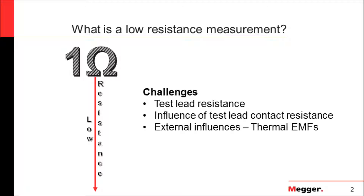Whenever we are measuring resistance values below 1 ohm, we consider those as low resistance, and we should be aware that at those very low levels, we're going to face a few challenges — like the influence of the test lead resistance, poor test lead contact, and if we have a joint between different metals, then we will have thermal EMF developed in the junction.